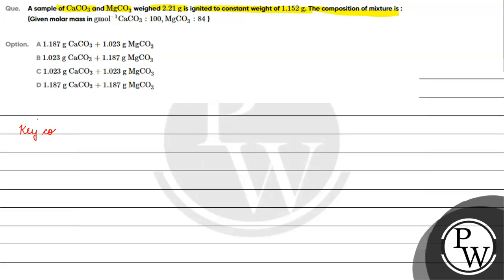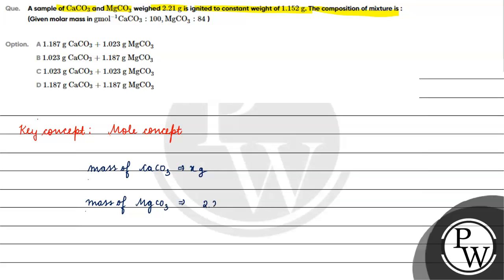The key concept for this question is the mole concept. Suppose the mass of calcium carbonate is x grams. So, the mass of magnesium carbonate is (2.21 - x) grams.